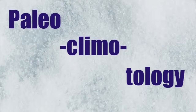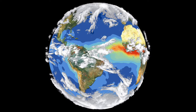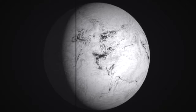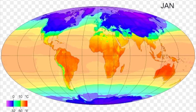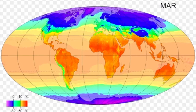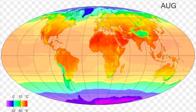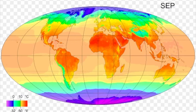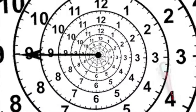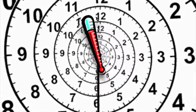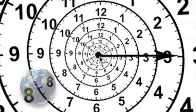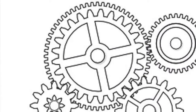Paleoclimatology is the study of what the climate of our Earth was like in the past. More specifically, it helps us find out what our Earth's climate was like before we started keeping meticulous, direct climate records, which give us a very accurate view of what our climate is like today. So now that you know what paleoclimatology is, you may be wondering: how does it work?